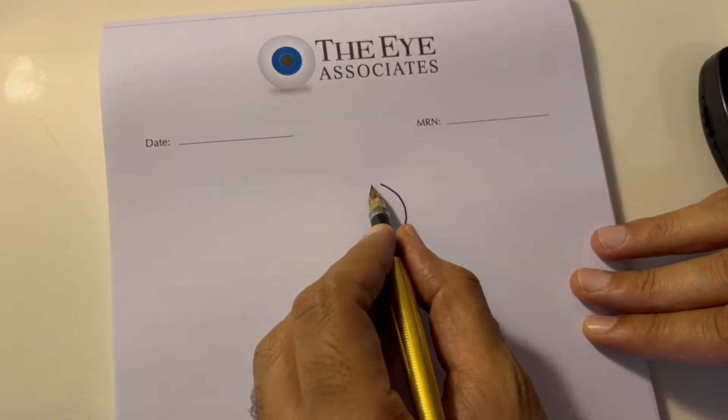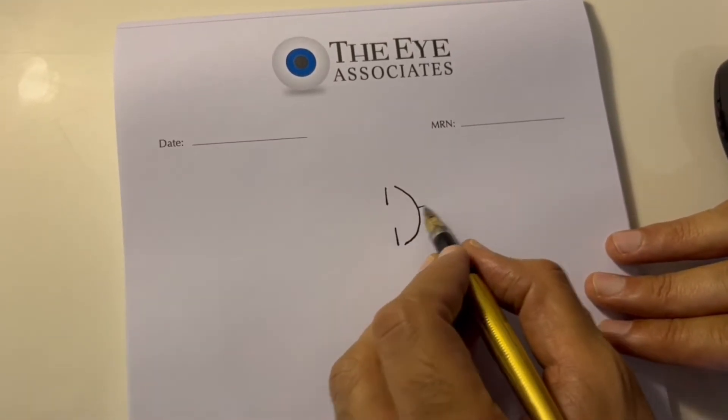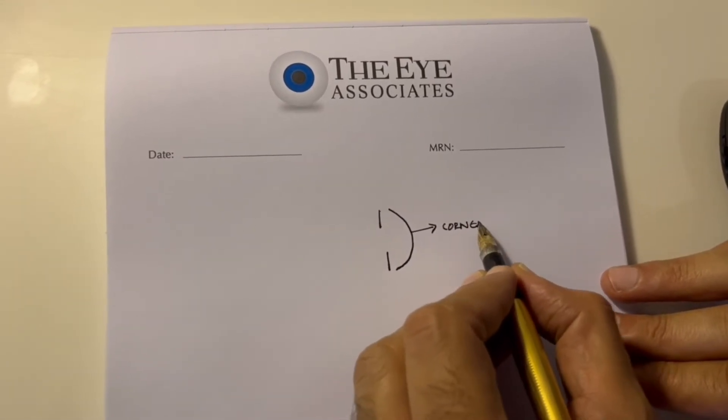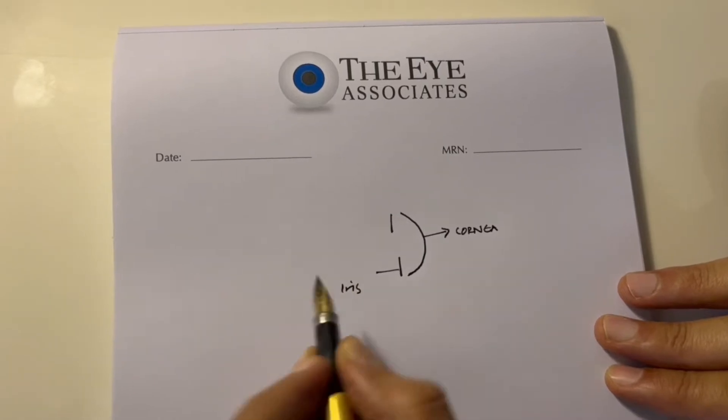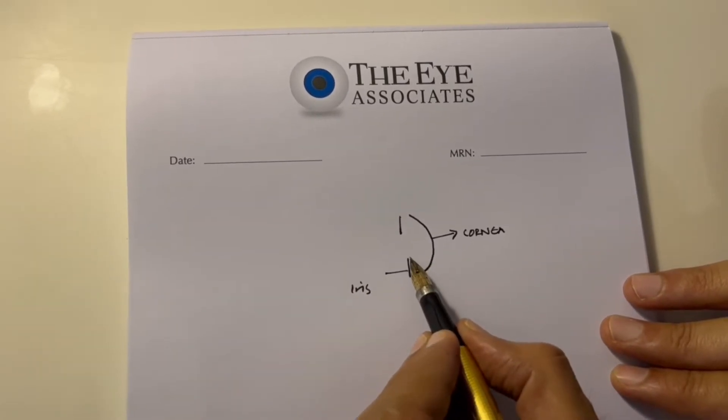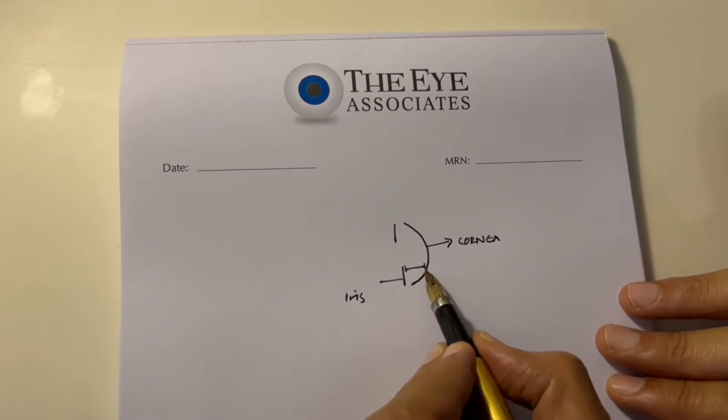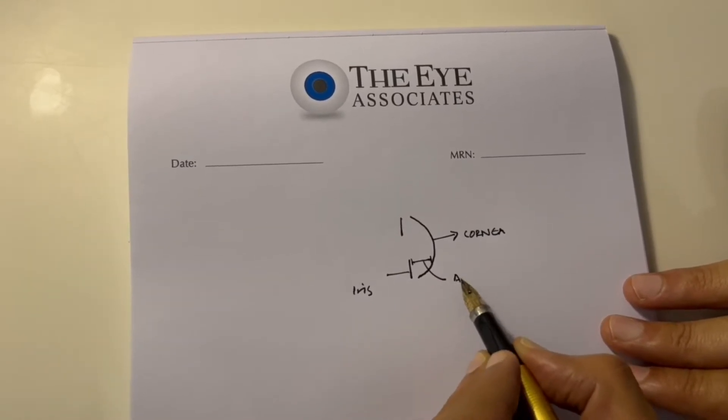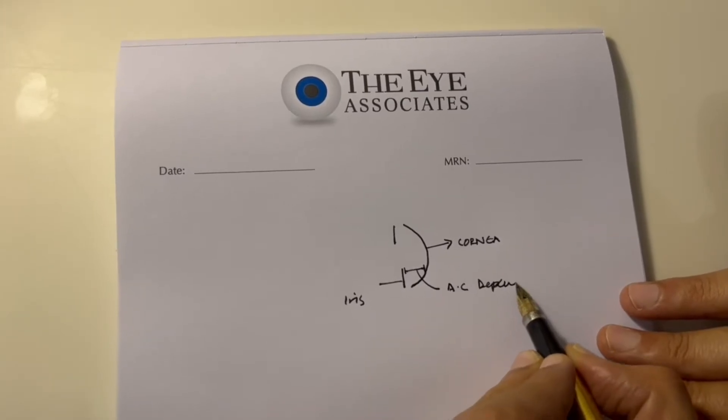you'll be able to appreciate the crescent of the cornea and the brow of the iris. You basically guesstimate the distance between the cornea and the iris, and that is the anterior chamber depth.